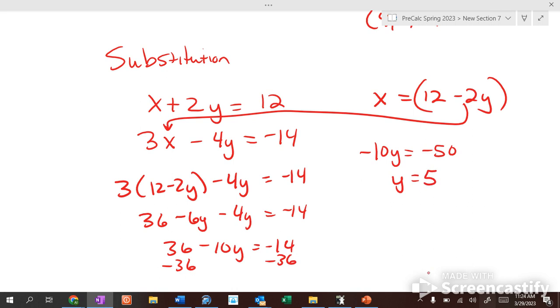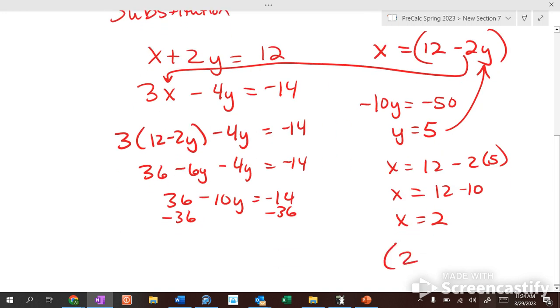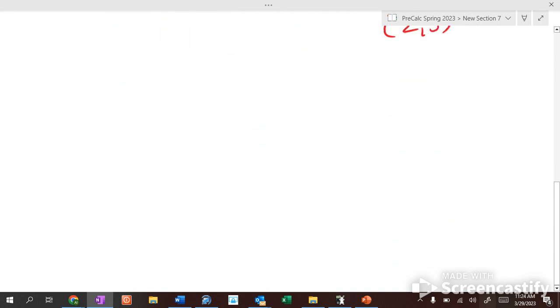So if y equals 5, we stick it into this equation to figure out what x equals. x equals 12 minus 2 times 5. x equals 12 minus 10. x equals 2. So the point (2,5) would be the solution to both equations. That's substitution.